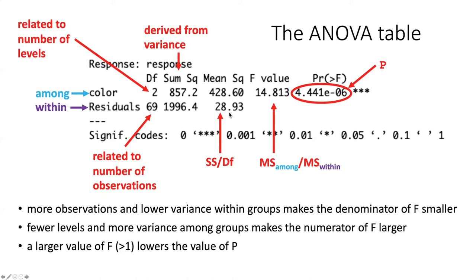And so what we want to know is how does the variation among the groups compare to the variation within the groups. If the variation among the groups is about the same size as the variation within the groups, then that variation among the groups is pretty meaningless. But if the variation among the groups is large compared to the variation within the groups, as we see here, then the differences among the colors is meaningful.